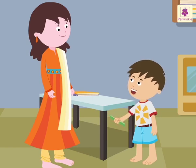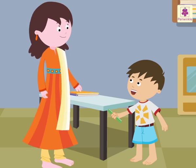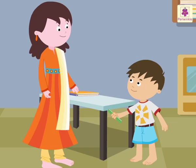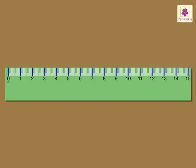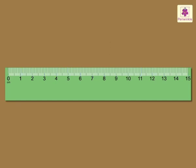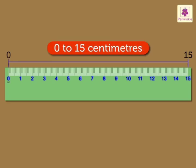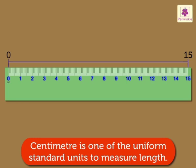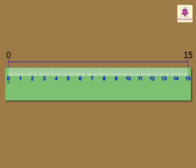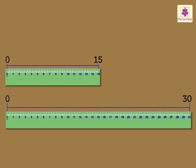So can we use a ruler to get the exact measurement? Yes, dear. A ruler is also called a scale. And what are these markings on it? These markings indicate the centimetres. We can measure the length of any object in centimetres. The numbers 0 to 15 show 0 to 15 centimetres. Centimetre is one of the uniform standard units to measure length. We use a 15 centimetre or a 30 centimetre ruler to measure small objects.